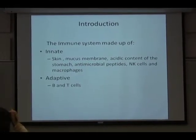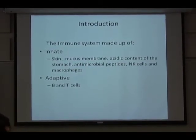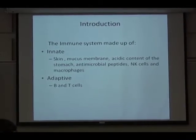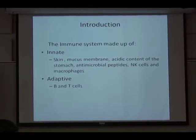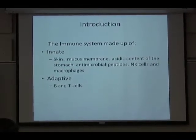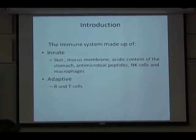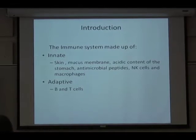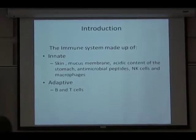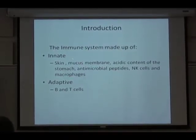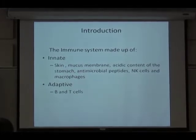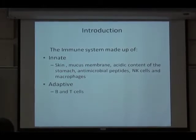The immune system has evolved to help us fight infections. There are two components: we have the innate immune system, which serves as the first line of defense when you have an infection. Under the innate immune system, we have the skin, which serves as the first line of defense.